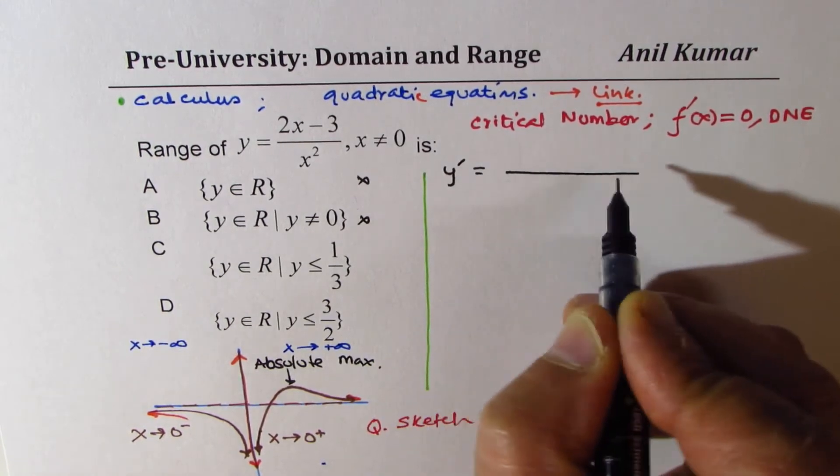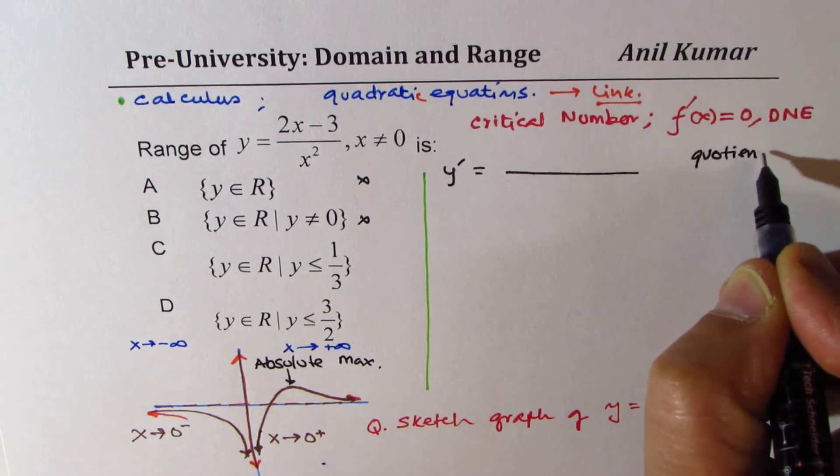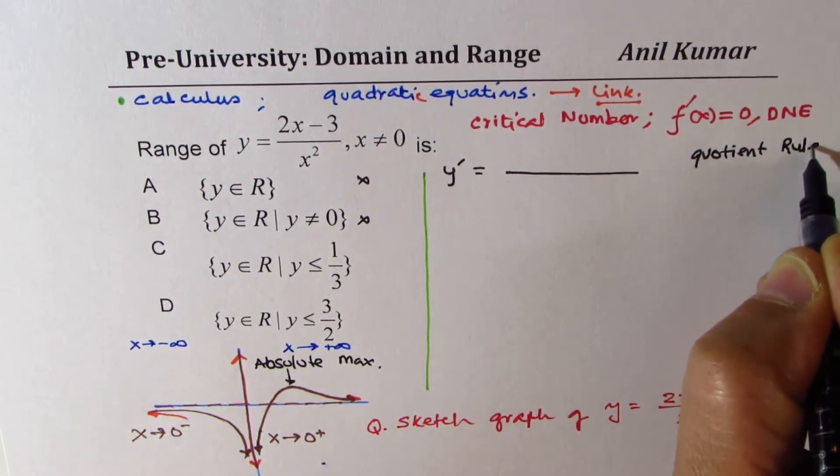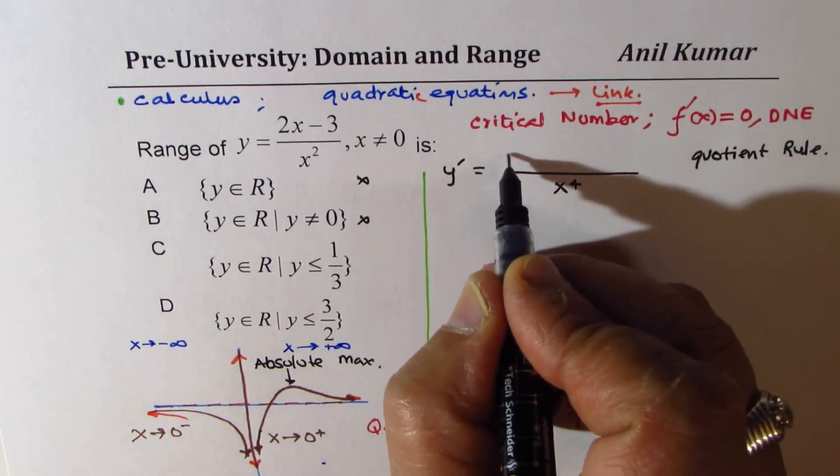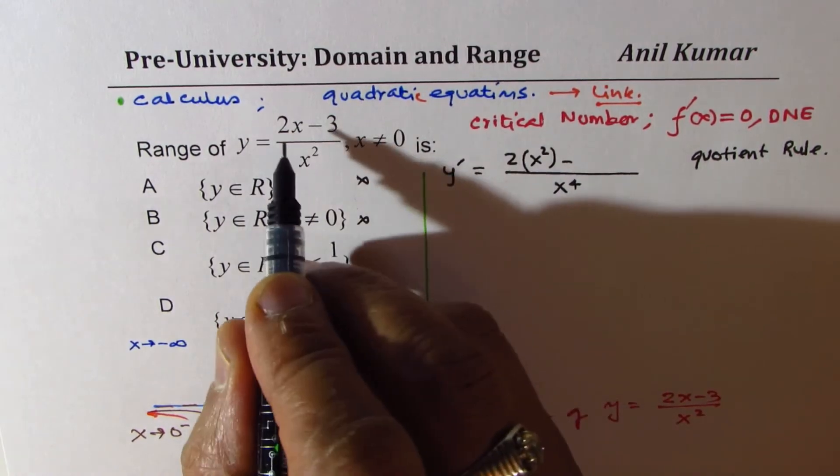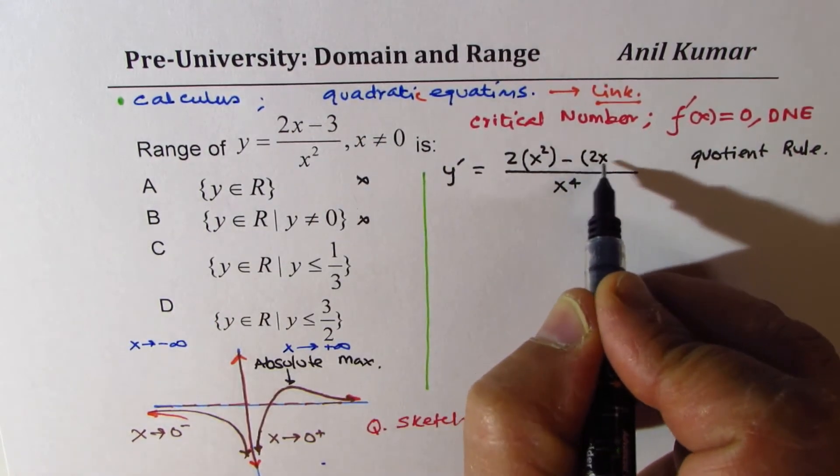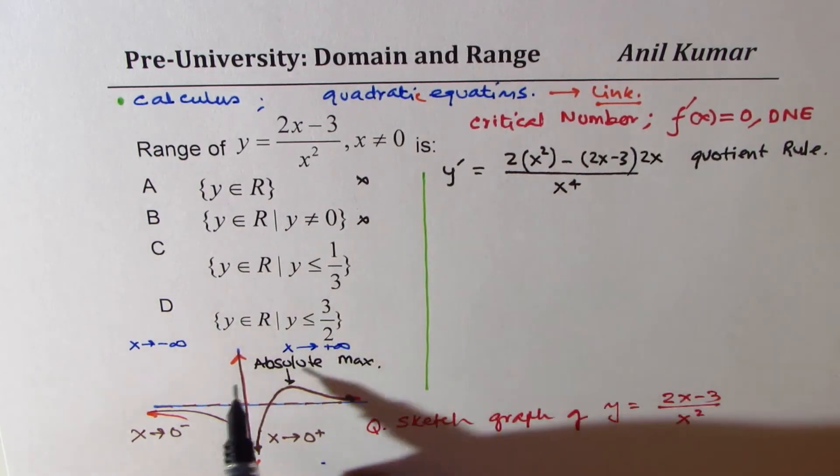Derivative is, we will apply the quotient rule. Denominator square, which becomes x to the 4. Derivative of numerator, which is 2, times denominator x squared minus numerator, which is 2x minus 3, times derivative, which is 2x.